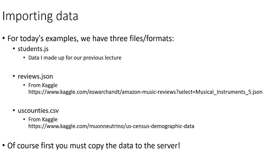For these demonstrations, we have three different files and file formats. The first is students.js, which is the data from our previous MongoDB lecture. Second, we have reviews.json, which is a dataset of Amazon reviews of musical instruments that I found on Kaggle. And the third dataset is uscounties.csv, also from Kaggle, and should be pretty familiar from the previous work we have been doing.